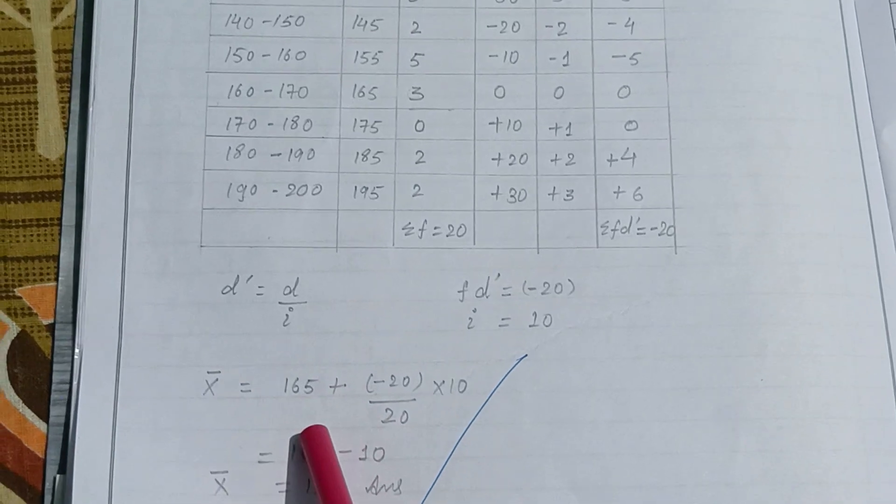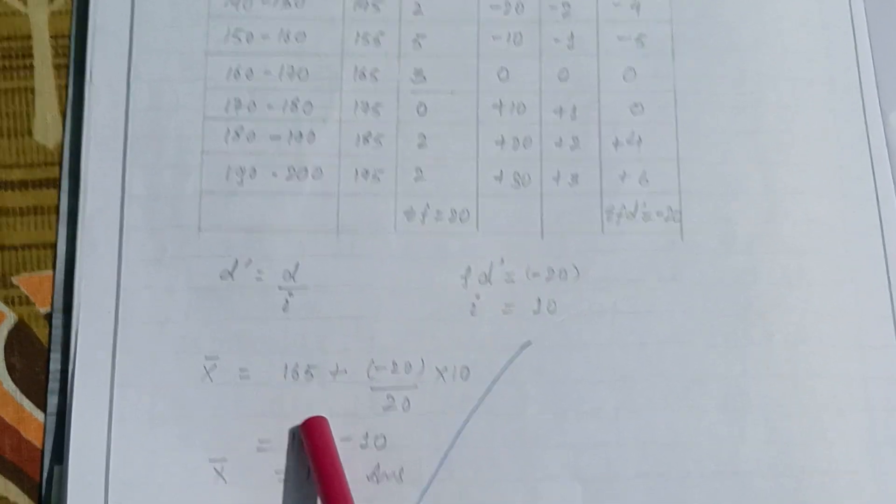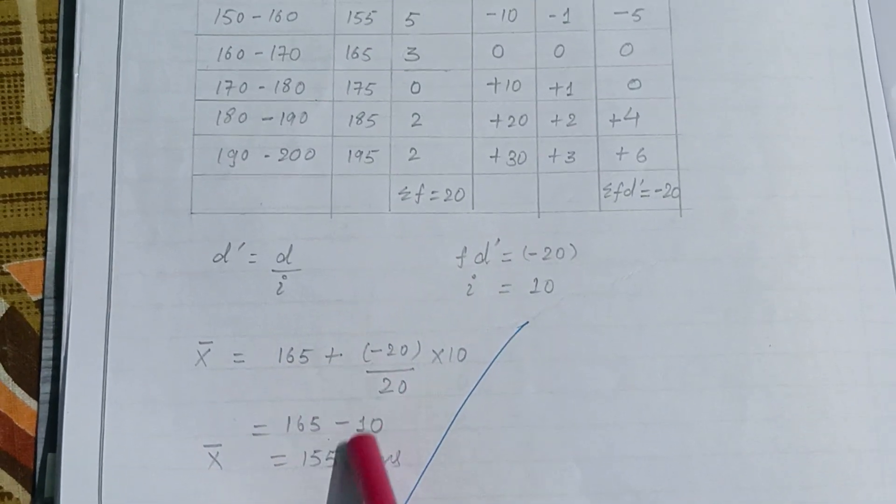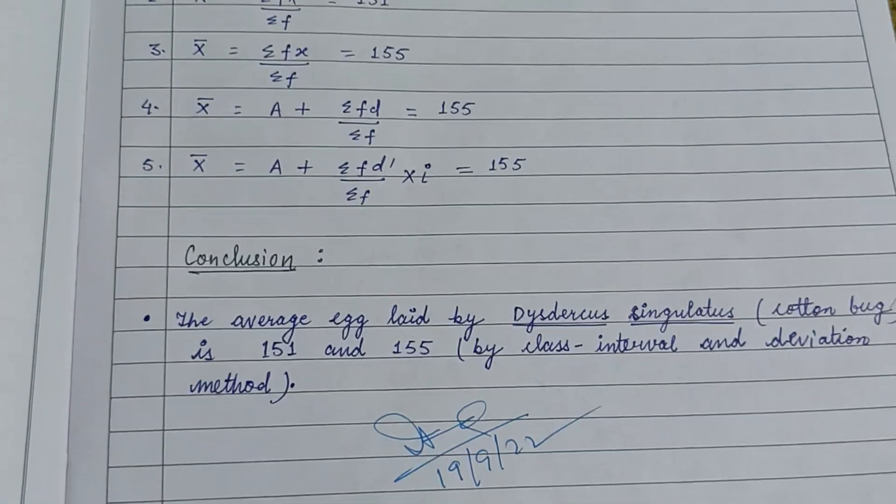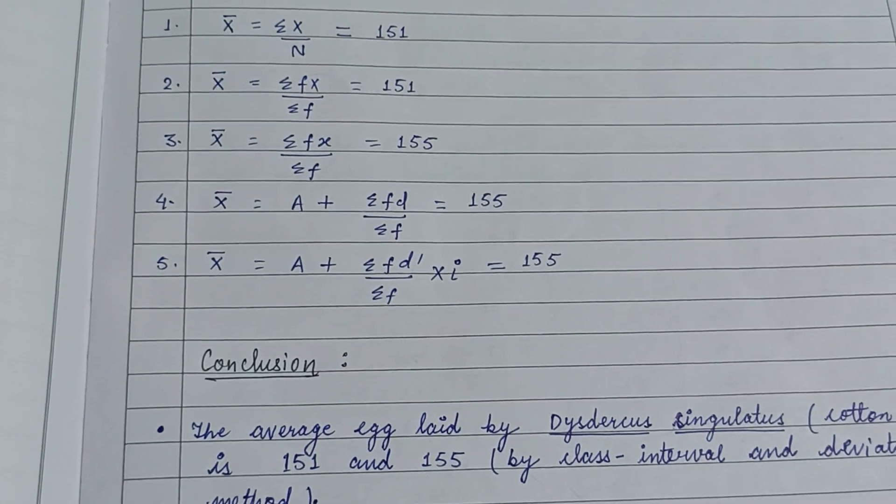Formulas are applied - assumed mean equals 165 plus minus 20 divided by 20 times 10. Results are as follows and conclusion is there. That's all about this. Keep watching, thank you.